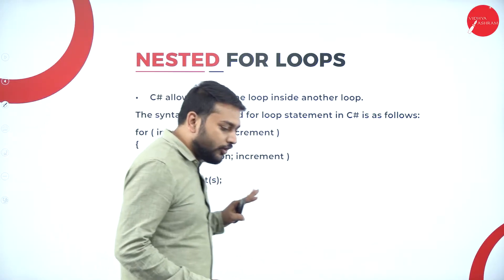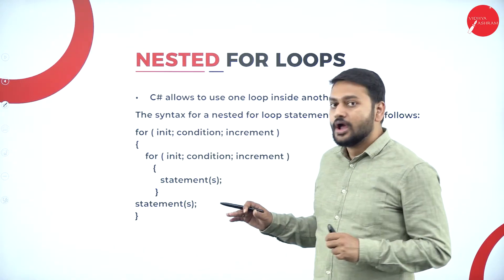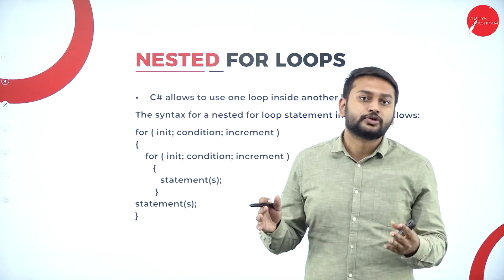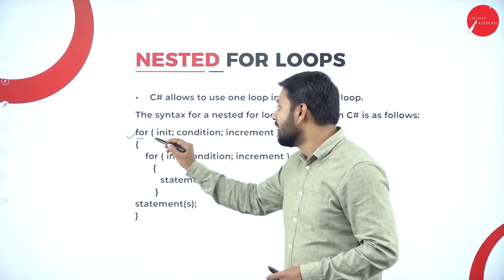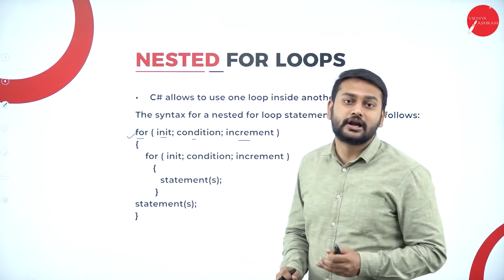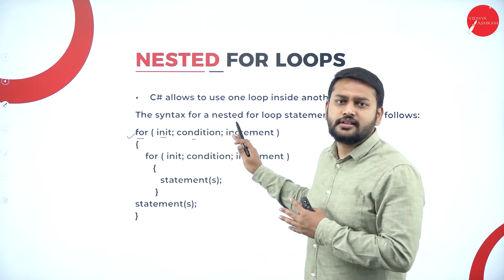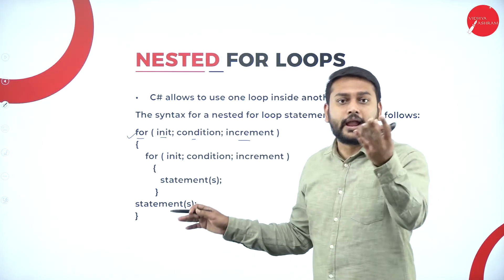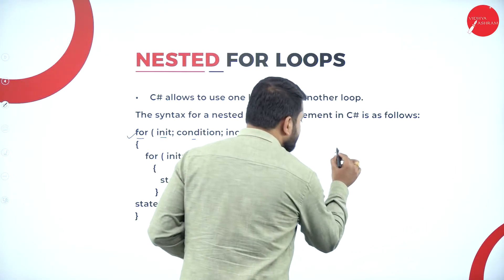What exactly is a nested loop? A loop inside a loop. For example, here I have taken the for loop. I have the keyword and the three different parts of the for loop: initialization, condition, and the increment or decrement operator. According to the syntax we discussed in my previous session, your for loop syntax should be like this.